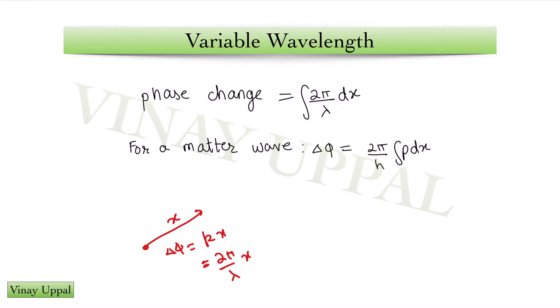For a matter wave, I can write wavelength as h/p and therefore, my phase change over a path length of x becomes this quantity, where h is the Planck's constant, 2π/h has been taken out of the integral and integral p dx is the quantity that we need to calculate.